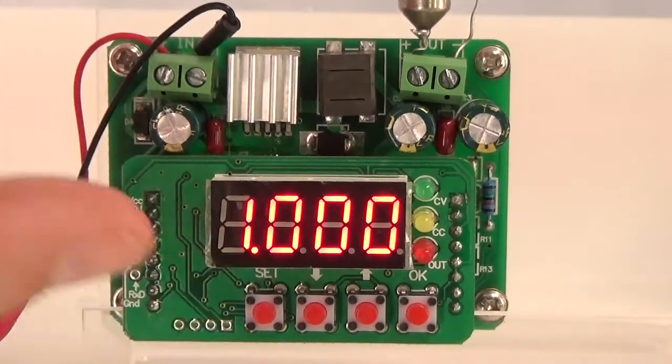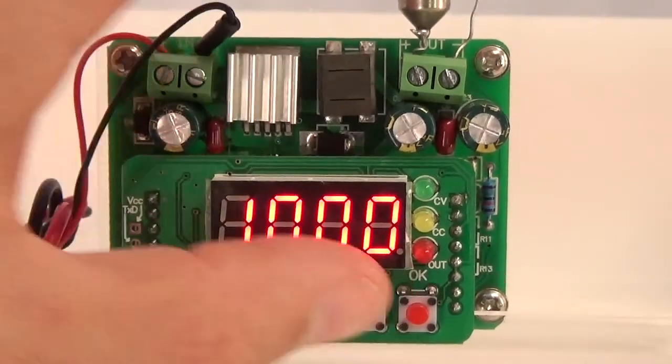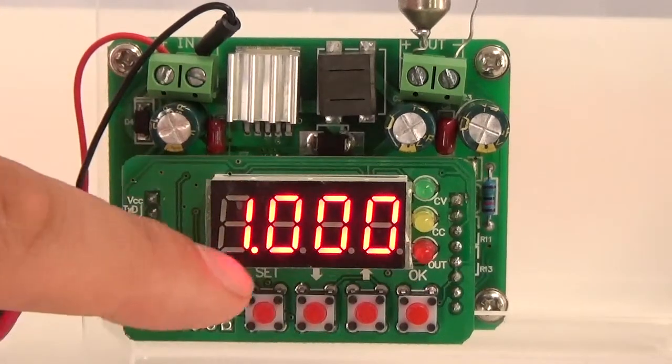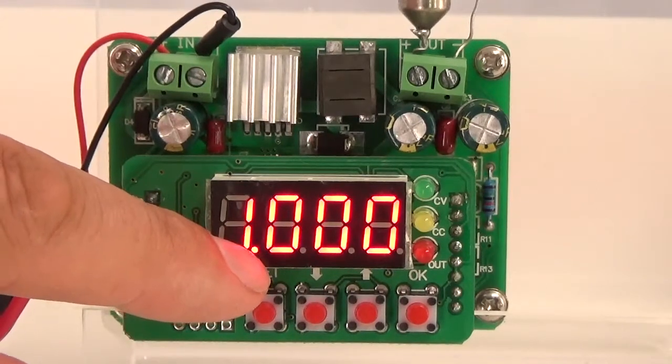If we press the set button, we can now get to the current, and it is set to 1A, 1000. You can see the dot here is reflecting that it is amp.